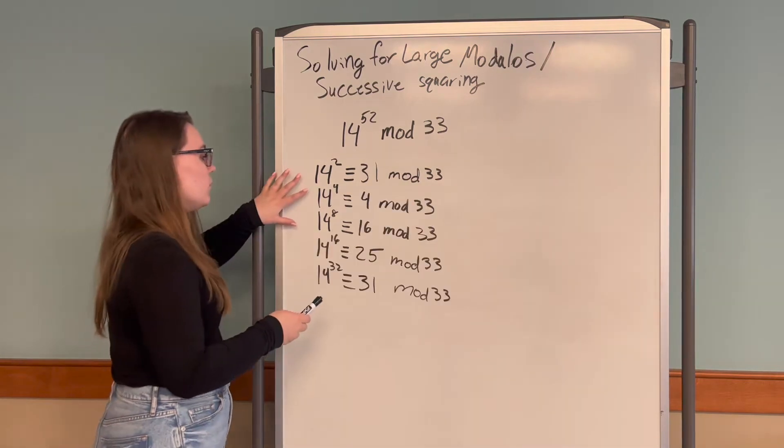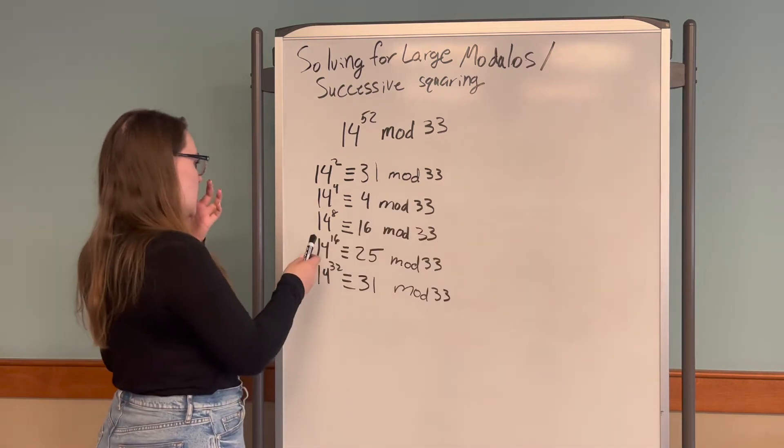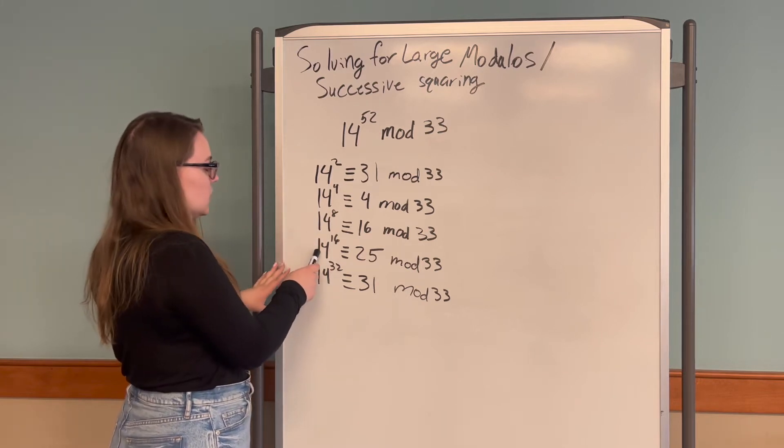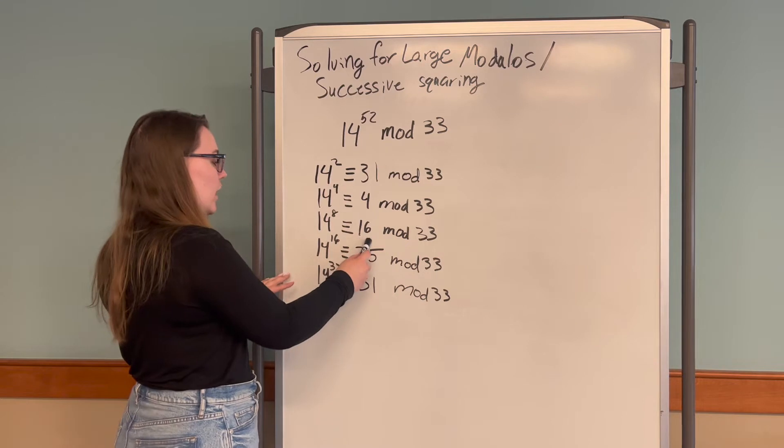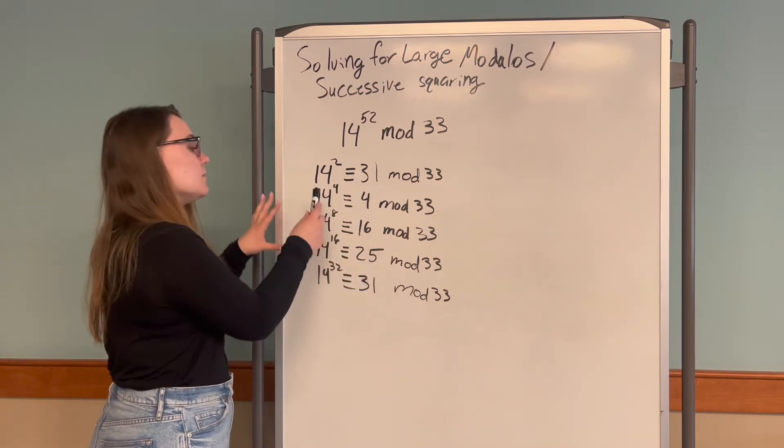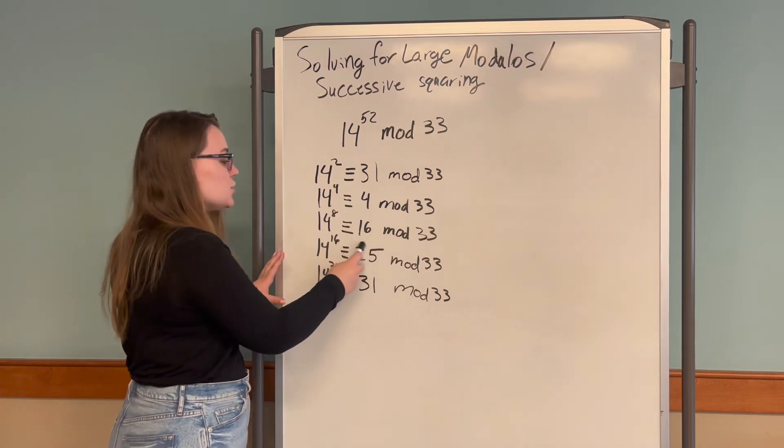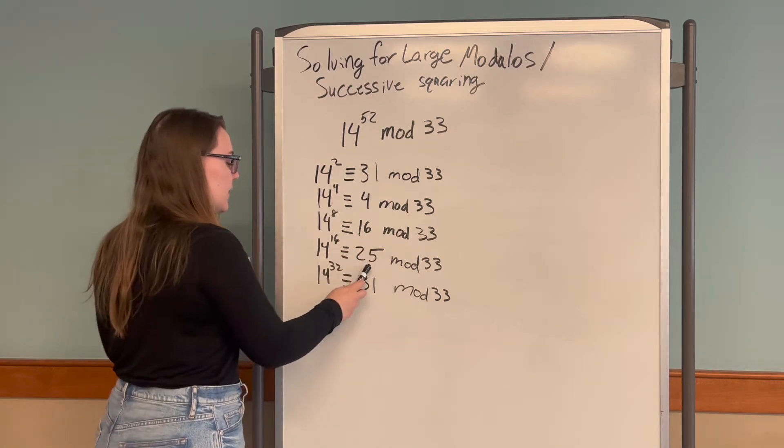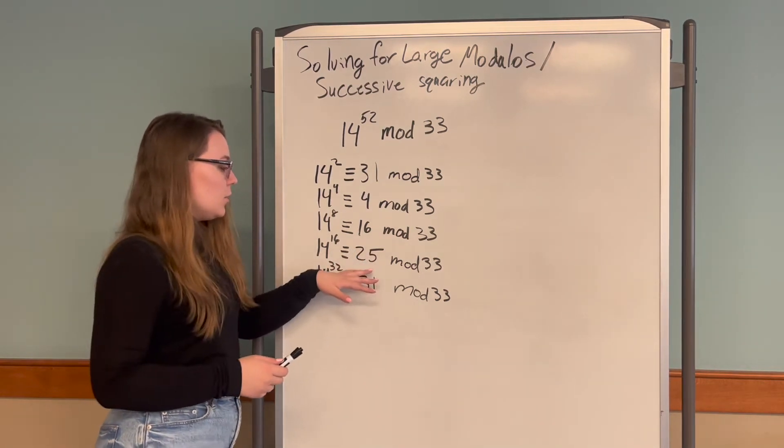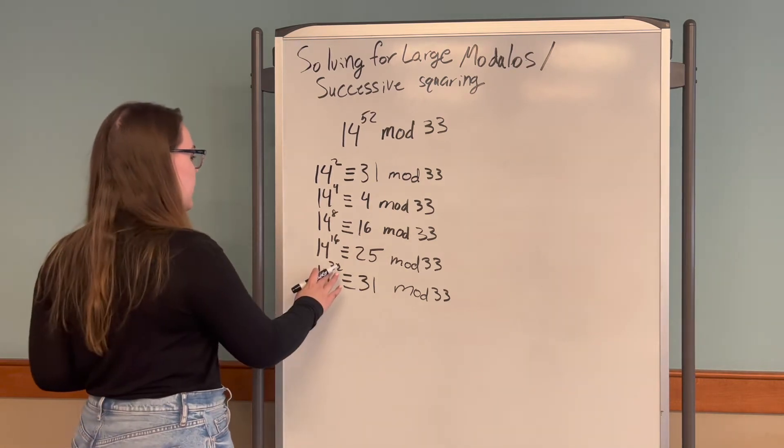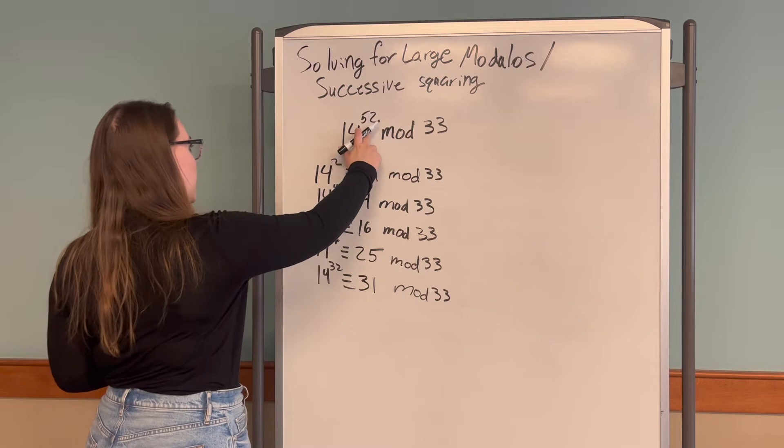We find all these values by squaring the previous number. For example, 14 to the 8 squared is 14 to the 16. So we can just square our 16 to find our next number mod 33. We stop at the exponent before we get to 52.